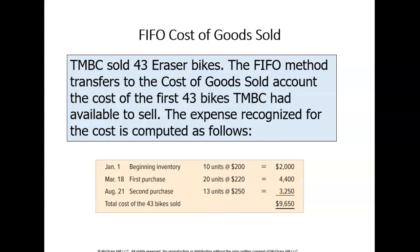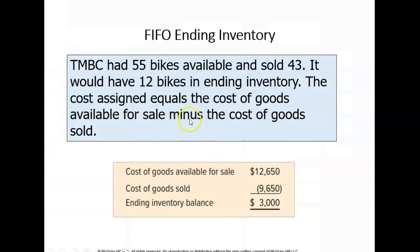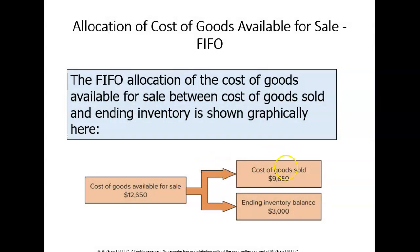Total cost of goods sold under FIFO is $9,650. Remember, there were 55 bikes in total — we sold 43, so 12 bikes remain, making up your ending inventory. Subtracting what was sold from what was available gives an ending inventory value of $3,000. When you add cost of goods sold plus ending inventory, it must always equal your cost of goods available for sale — $9,650 plus $3,000 equals $12,650.